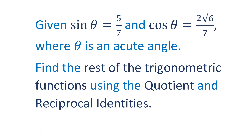In this problem, we are given that sine of theta is 5 over 7, and cosine of theta is 2 square root of 6 over 7, and theta is an acute angle. We will find the rest of the trigonometric functions using the quotient and reciprocal identities.